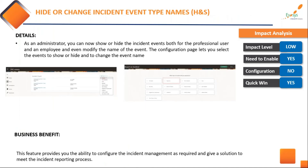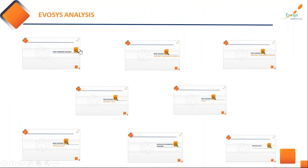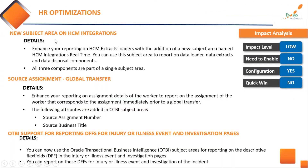There is also an enhancement to the ability to change or hide a particular event type of an incident — a minor enhancement but useful for organizations with health and safety. That brings us to the end of the features covered in this session. Please do visit the rest of the features — on OTBI there are enhancements, new subject areas on HCM integrations for organizations doing integrations with third-party applications, more information on source assignment of a global transfer, and injury-related reporting in the health and safety module.